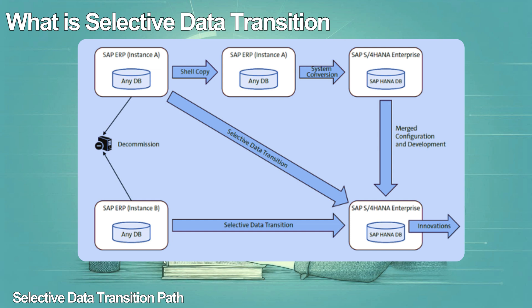In this depicted example of the selective data transition, the team created a shell copy of the first instance and carried out the system conversion of the copied instance. In the final step, the team uses the selective data transition approach to migrate the agreed-upon data — based on the customer's functional or regulatory requirements — from all the instances, and merges the configurations and the development work.